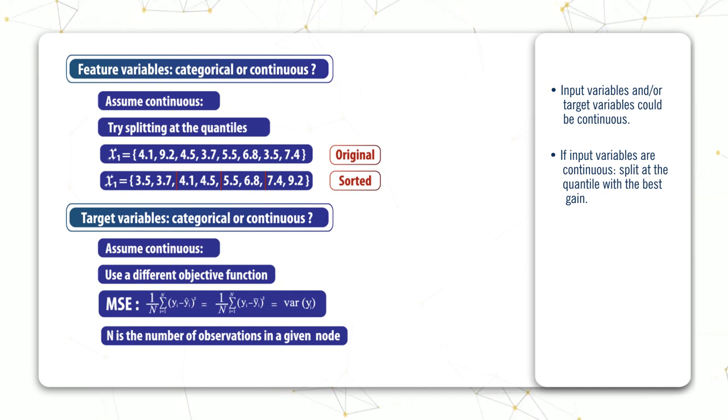We can now replace y-hat with the mean of y within a leaf node, which we'll just call y-bar. But this is now just a definition of variance, and so the MSE just reduces down to the variance when the predicted y is equal to the average y—meaning that y-hat equals y-bar.